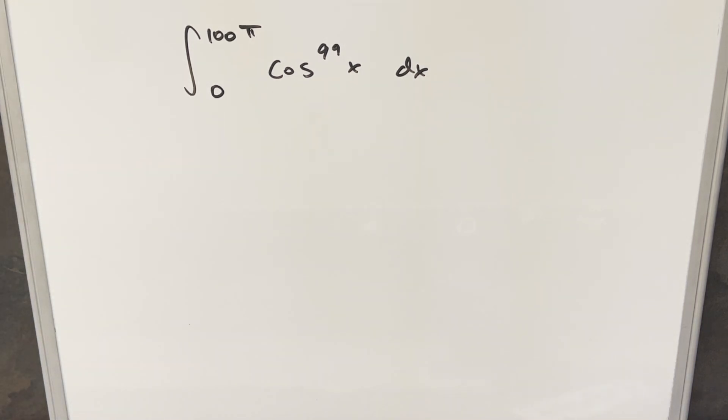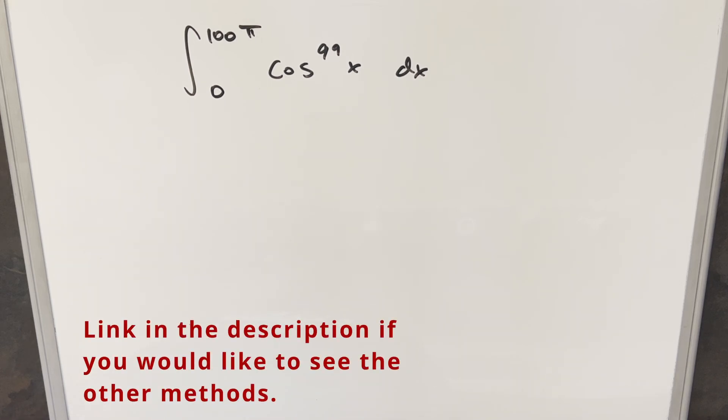Okay, we've got another integral. We've got the integral from 0 to 100π cosine to the 99th x dx. This is actually a problem I did recently. We did four quick methods.